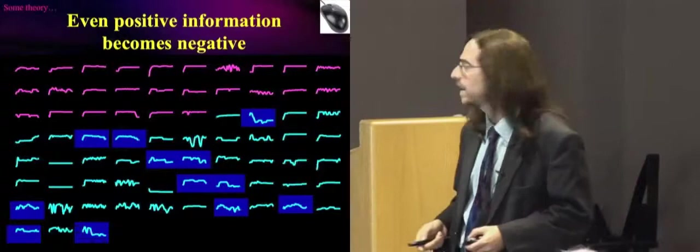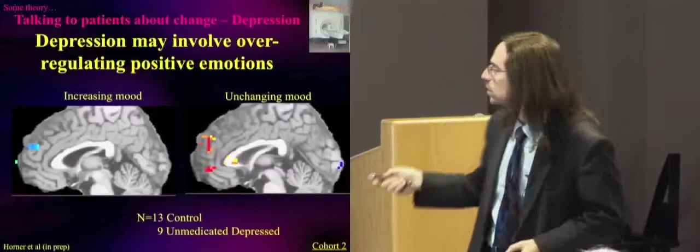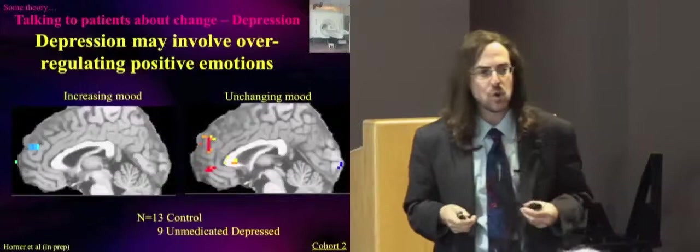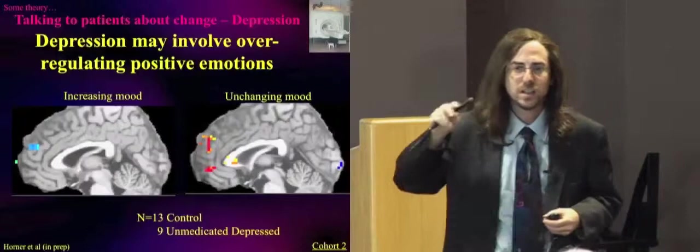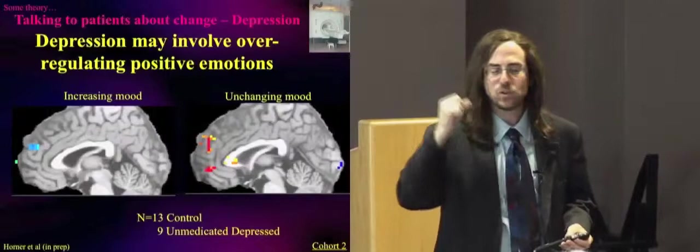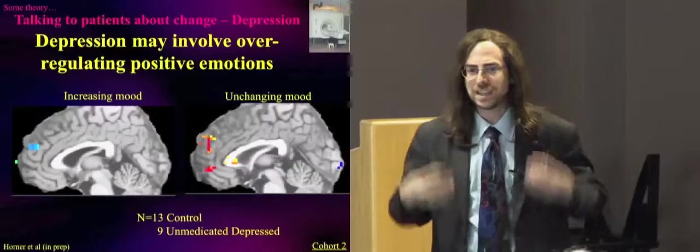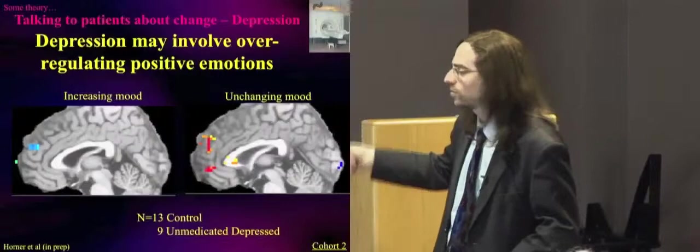Where in the brain? As your mood is increasing, all those prefrontal regulatory mechanisms are shutting off. You're letting yourself go there. In my depressed people, especially when mood is unchanging, that's when you're engaging regulation. So it's not that depressed people have a lesion. They can't, they don't have a regulatory capability. It's they're using it at a different time. They're regulating positive information. I don't deserve that. I shouldn't feel that. Negative information they don't regulate.